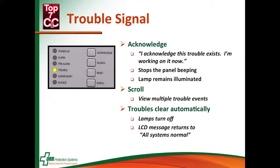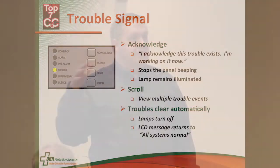Scroll — that's another button we haven't talked about. In that multi-line LCD display on panels, if you have multiple events, the scroll button will help you scroll through those things so you can see all the different conditions on your panel. Sometimes multiple trouble conditions may occur because of whatever's happened to the system.